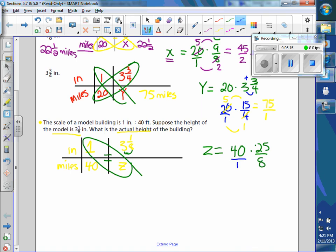And one more practice. 8 goes into itself once. It goes into 40 five times. Multiply the denominators and you get 1. Multiply the numerators and you get 125. So z is 125 feet. So that's pretty much what you're doing in section 5.7.